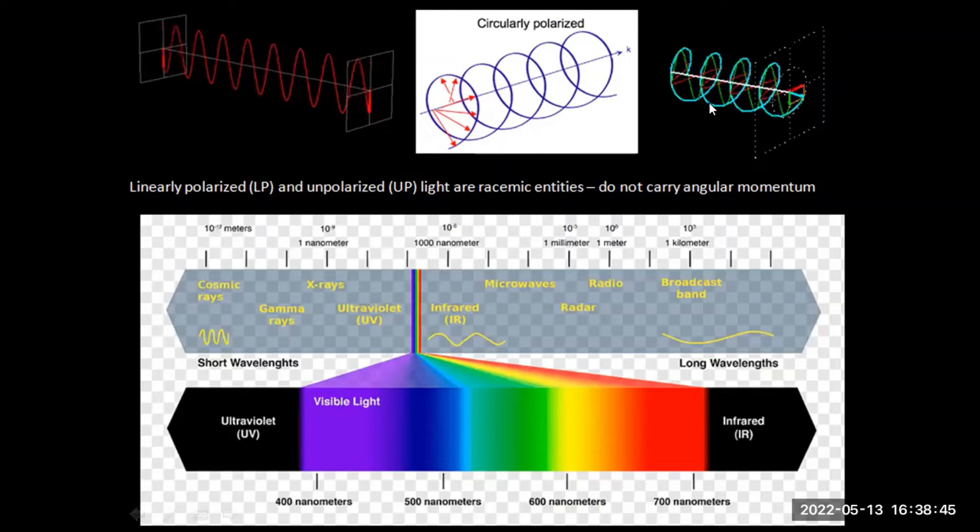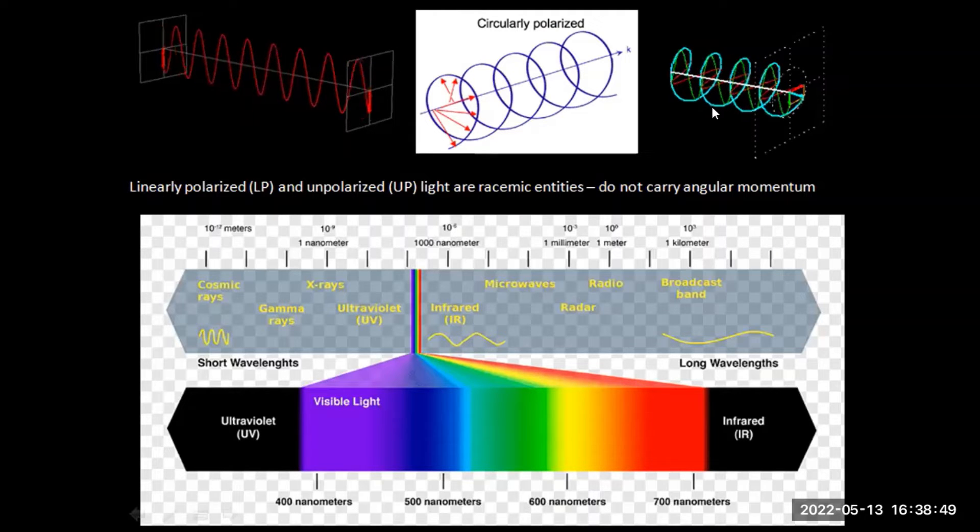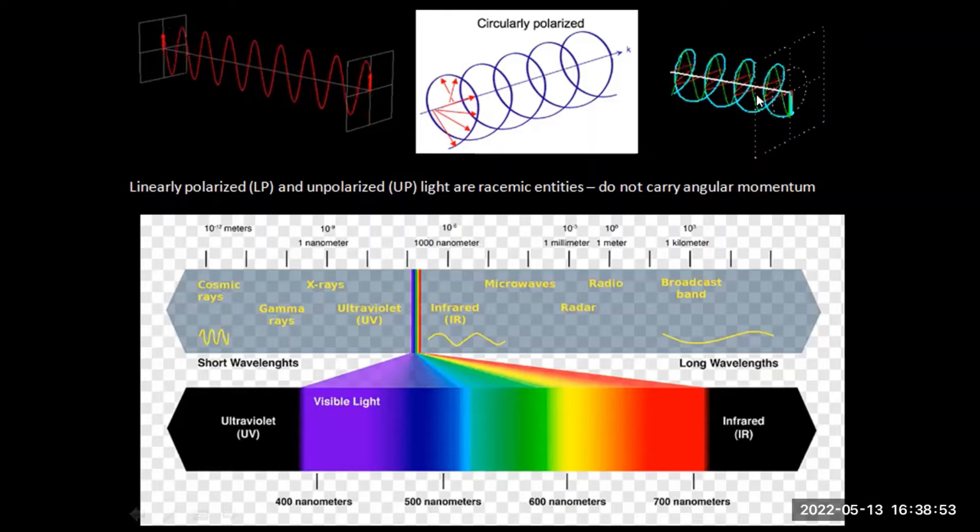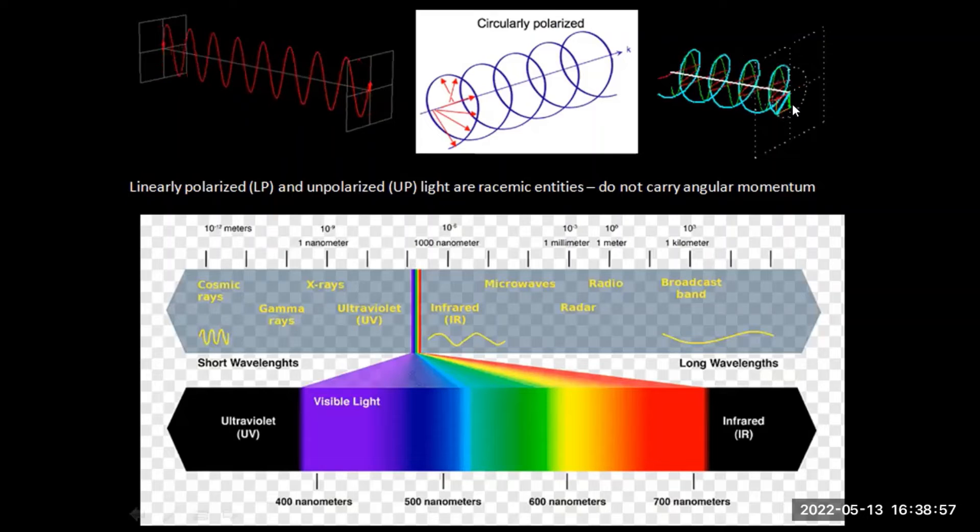And it turns out in fact, at least according to what we are postulating, that the light, the circular polarization of the light is in fact what is driving the homochirality of life.